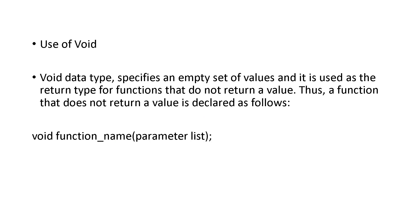In some cases, we give the return type as void — that is the return type, followed by the name of the function and the parameter list. Void means it is returning nothing. It specifies an empty set of values and is used as a return type for functions that do not return a value. In many programs we need this type because the function is not returning a value.